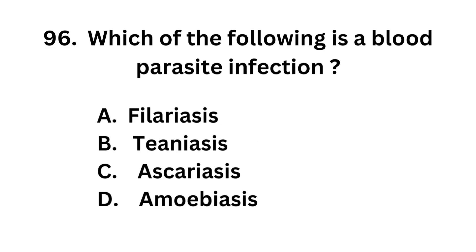Question number 96. Which of the following is a blood parasite infection? Option A: Filariasis. Option B: Taeniasis. Option C: Ascariasis. Option D: Amoebiasis.